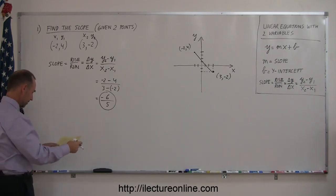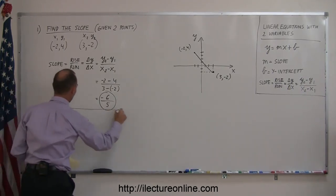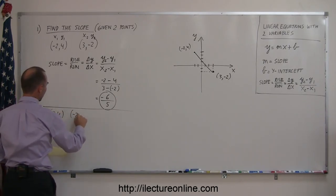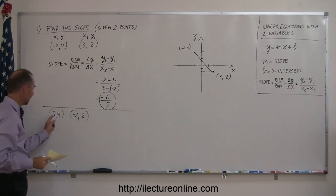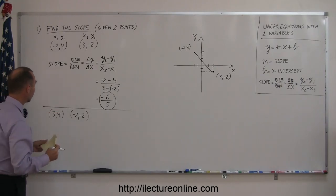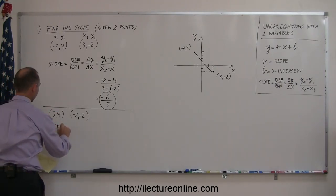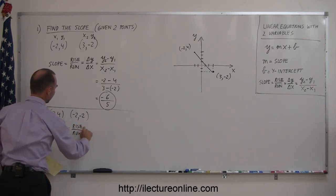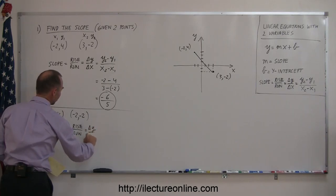Let's do a couple more. I have a few more points right here. So what about the point 3 and 4 and negative 2 and negative 2? Remember that these are the x values of the two points and these are the y values of the two points. So finding the slope by definition is equal to the rise over the run, which is equal to the change in y over the change in x.